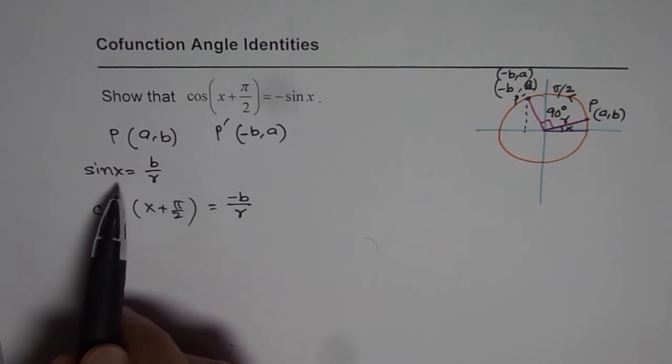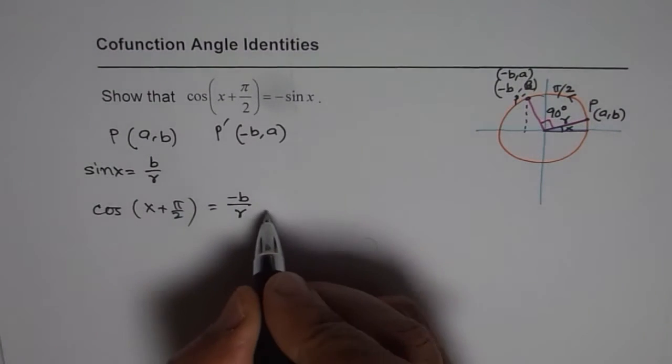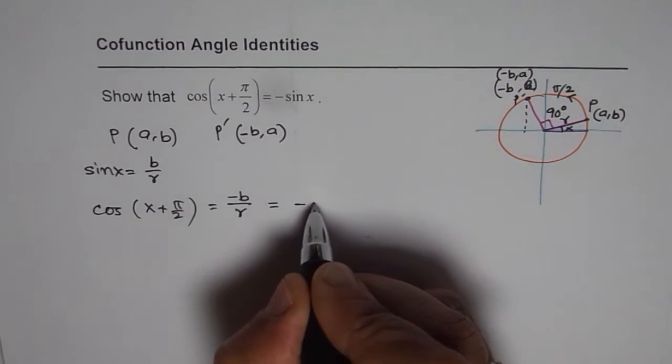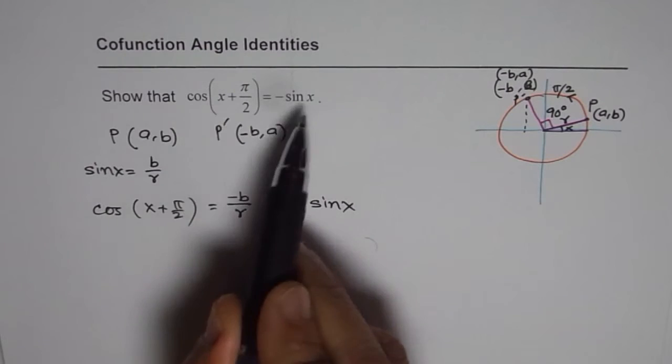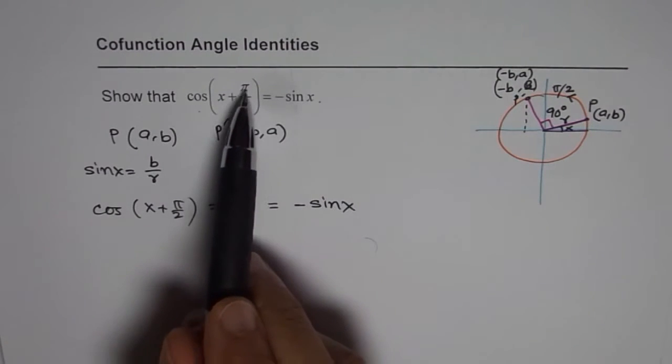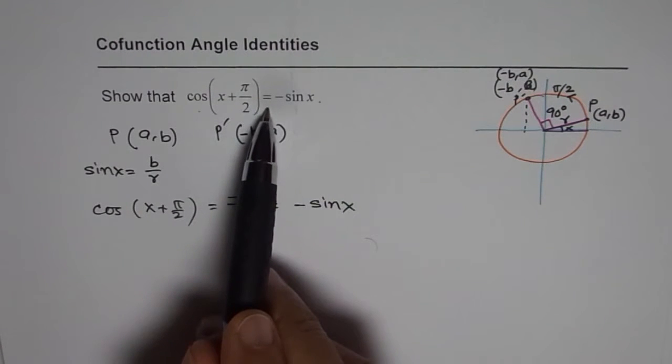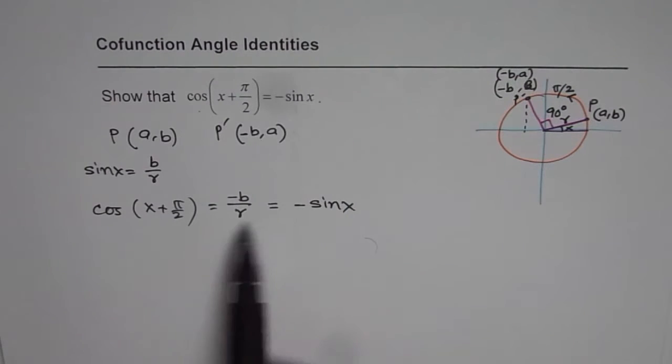Now what we see here is that B over R is sine x, so I could write this as minus sine x. So that is how I can show that cos of x plus pi by 2 is indeed equals to minus sine x. Do you see that? So that is how you can prove it.